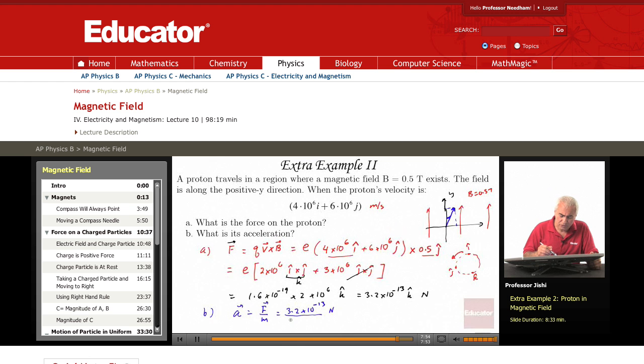Divided by the mass of the proton, which is 1.67 times 10 to the minus 27 kilograms.